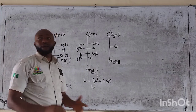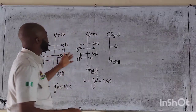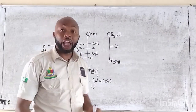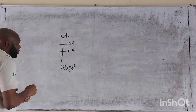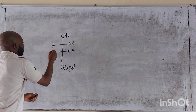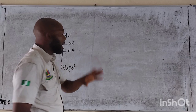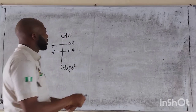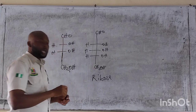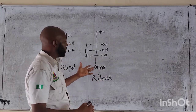In the monosaccharides we have the trioses, we have the tetroses. For the trioses we have the glyceraldehyde. For the tetroses we have, for example, erythrose — that is a four-carbon sugar. We also have the pentoses; an example is ribose, which has five carbon atoms. So ribose is a sample of the pentoses.